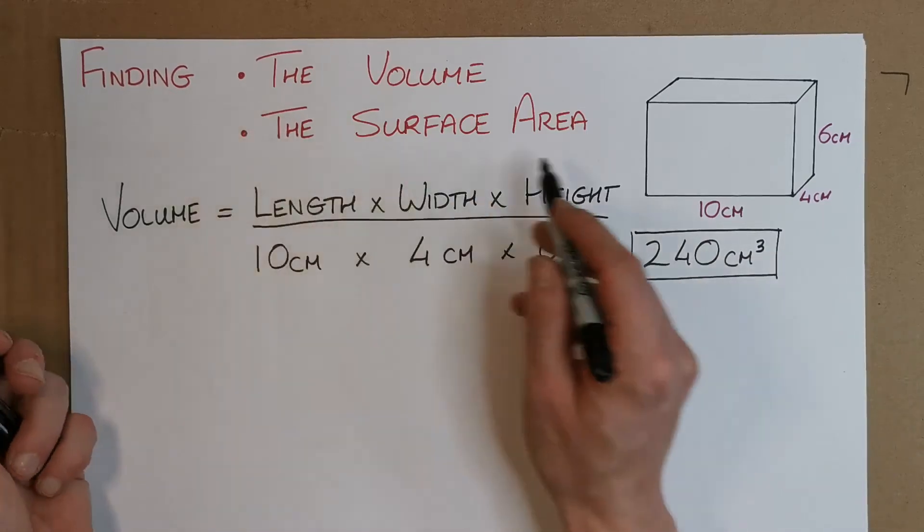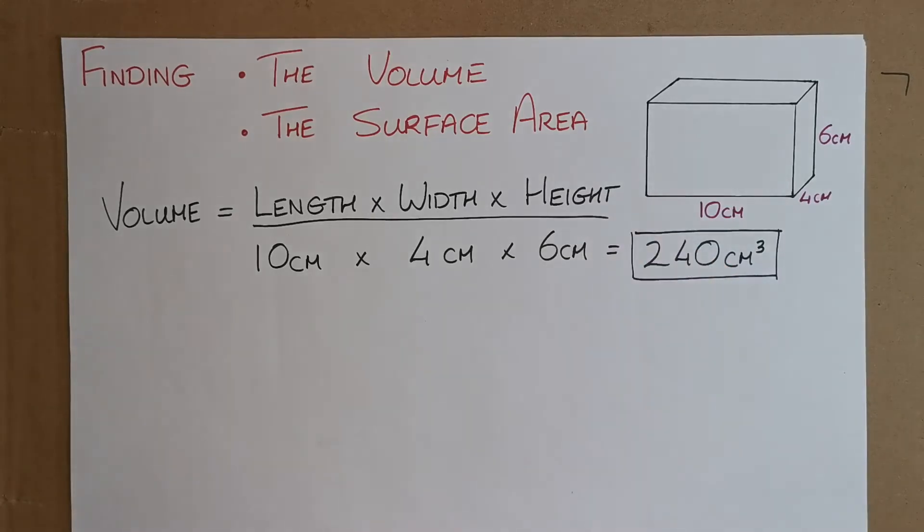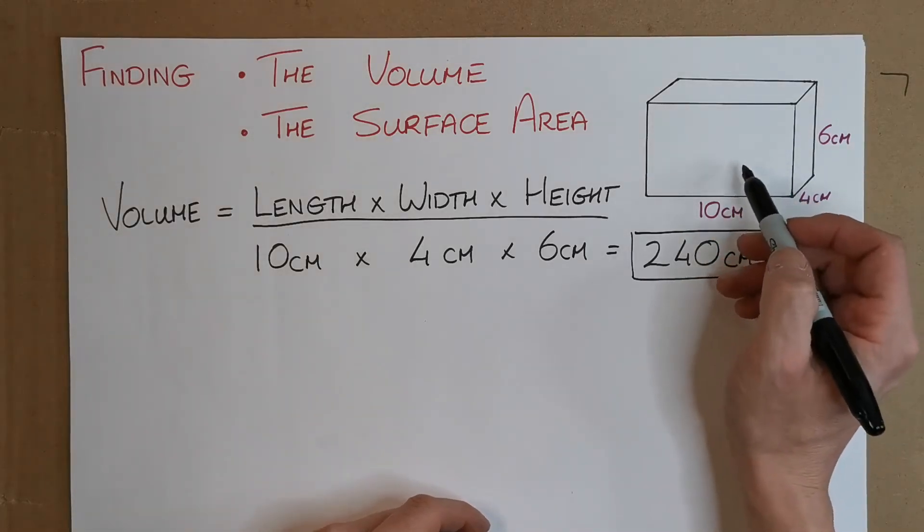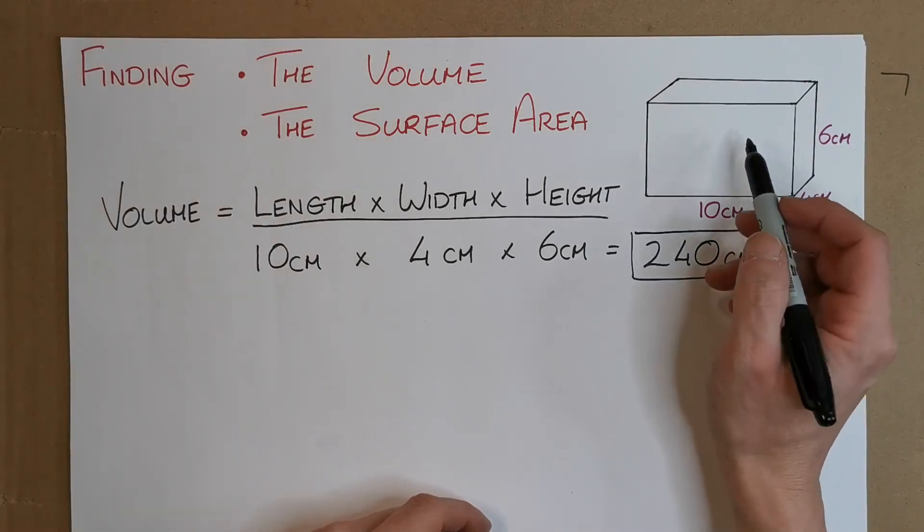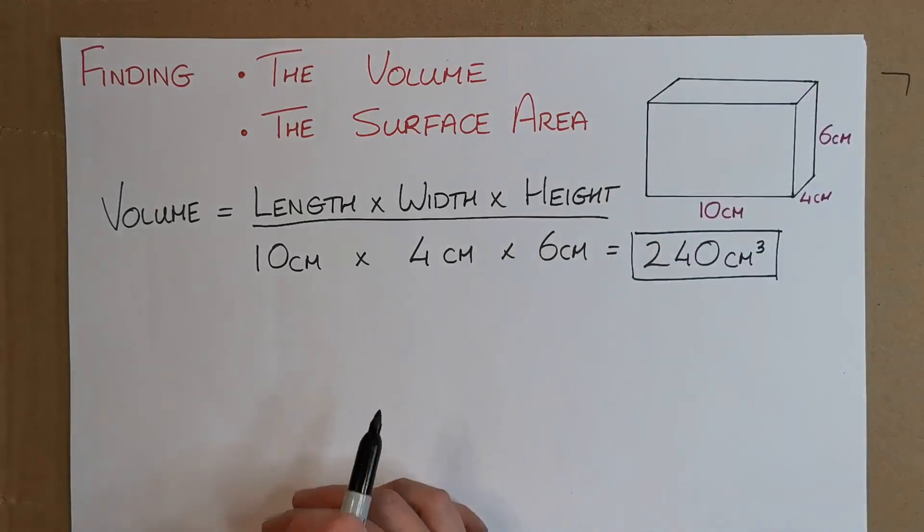So now we move on to surface area. Not harder mathematically, but definitely trickier to think about. For surface area, this is the way I like to think about them: if you had to wrap this thing in paper, like wrapping paper, how many sides would you have and what would the area of each side be?